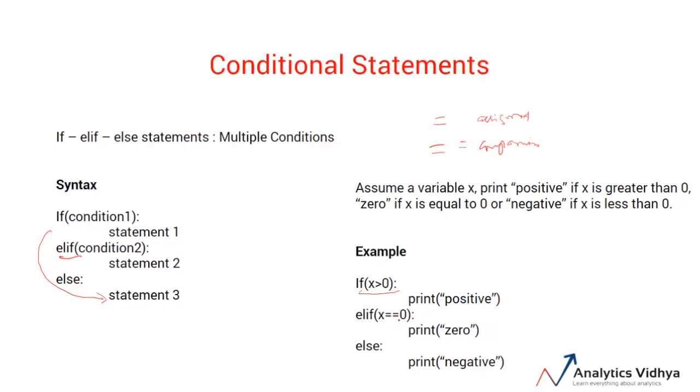This is a comparison task. If x is equal to 0, we want to print 0, and if x is neither greater than 0 nor equal to 0, we want to print negative. This statement falls under the else block.